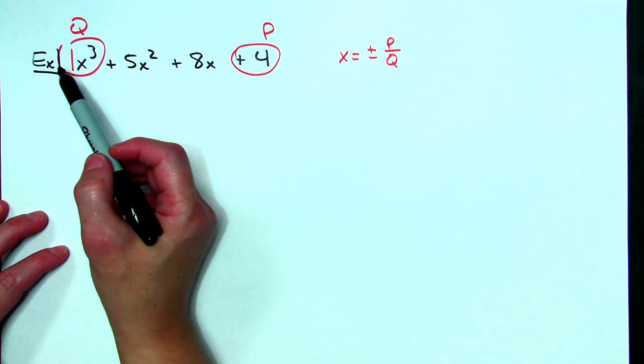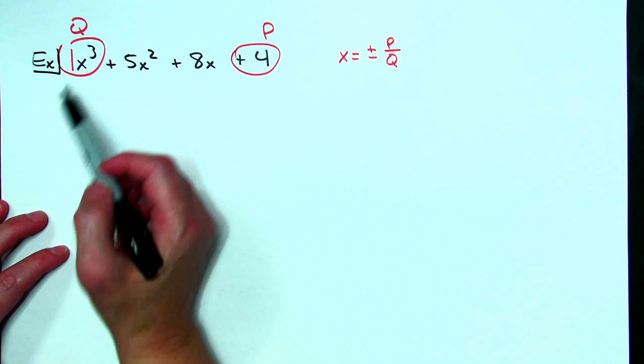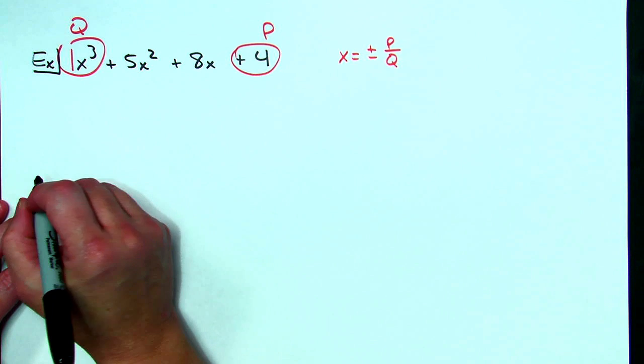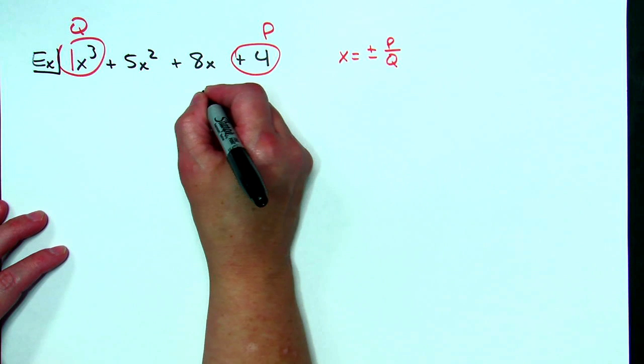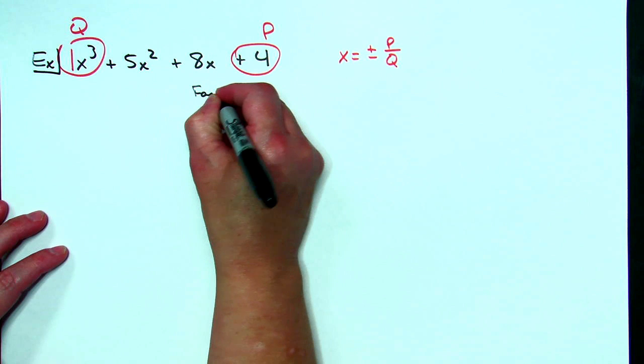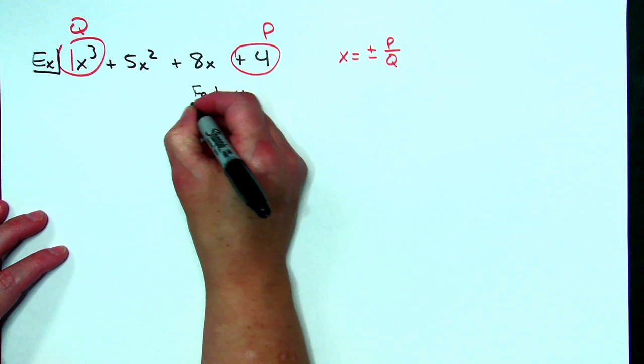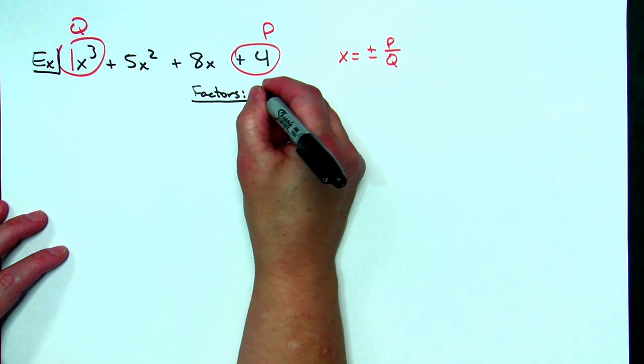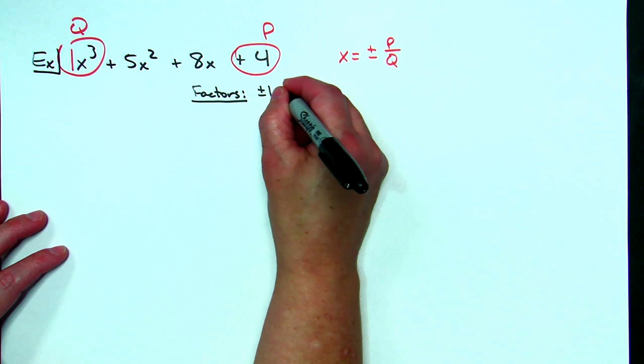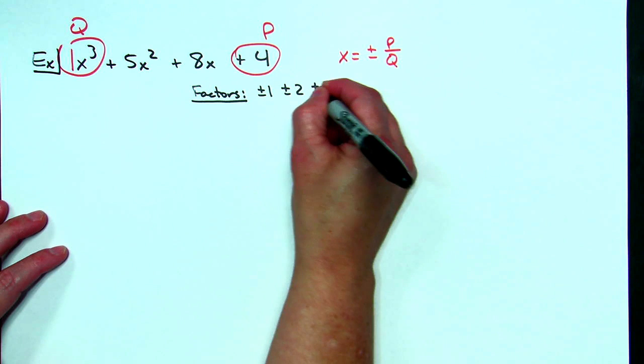So p over q is going to give us all the factors of 4 over all the factors of 1. 1 over 1 is not going to have a bearing on this at all so I just need to look at my factors of my 4. Possible factors would be plus or minus 1 plus or minus 2 plus or minus 4.